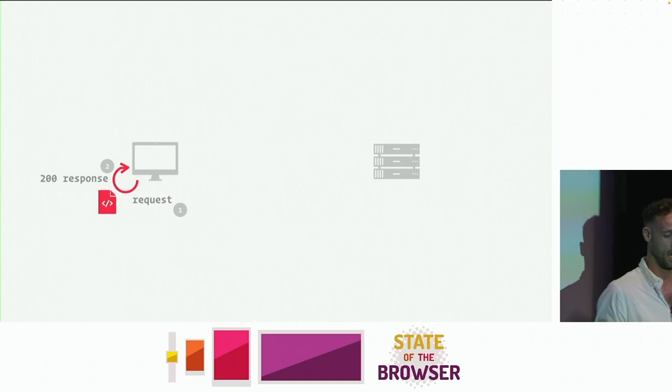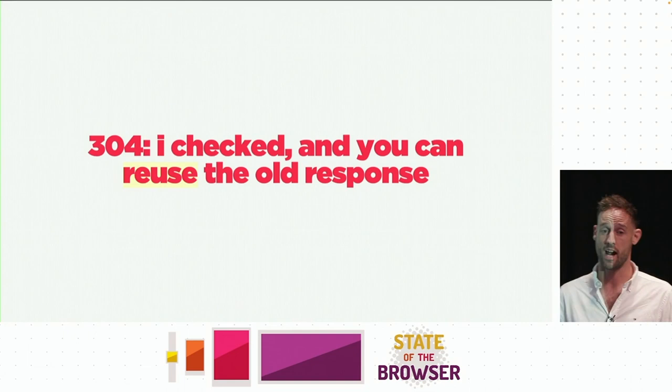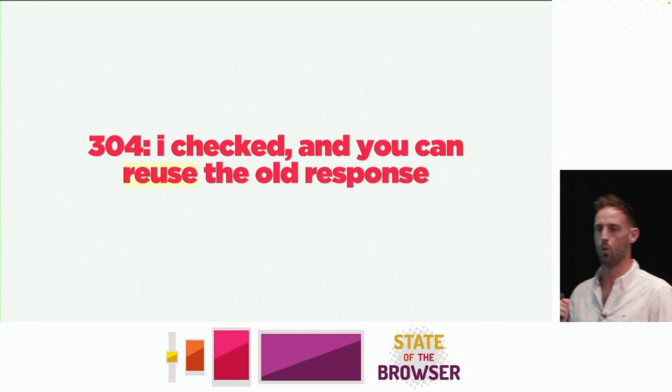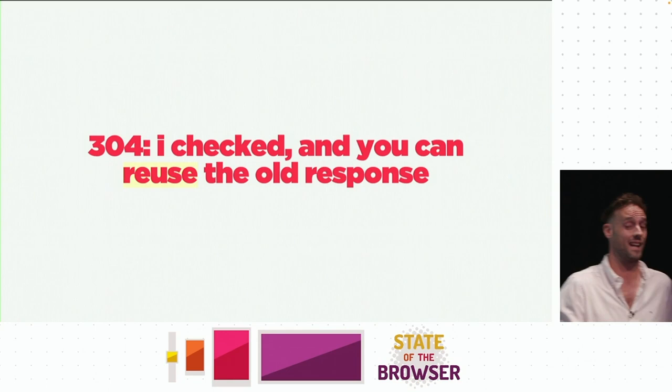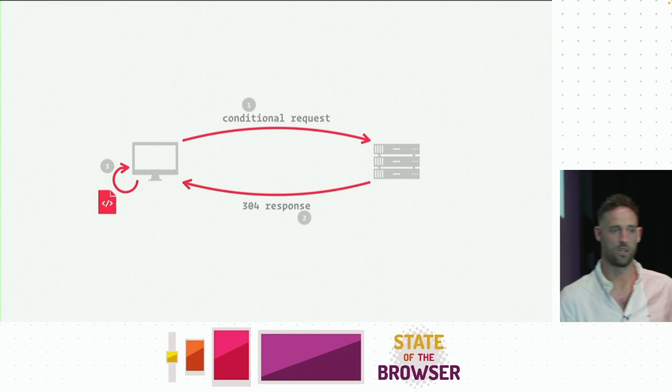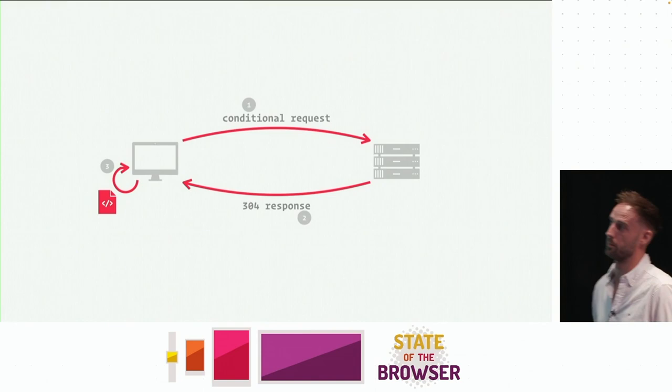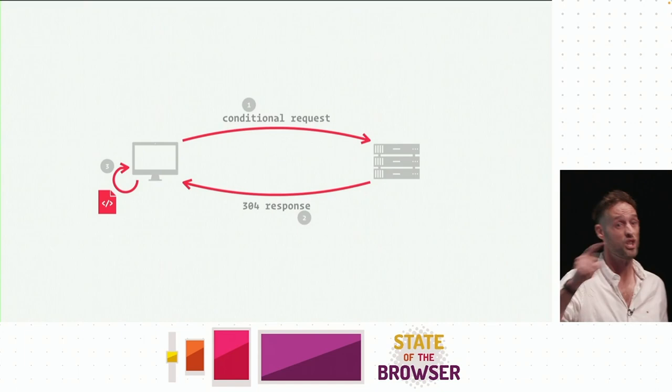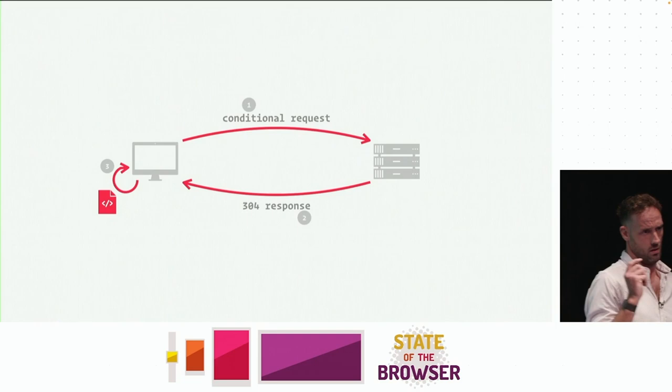A 304 involves a conditional request — a request that goes out with certain extra request headers to verify whether the file has changed. If not, we bring back a 304 response that says 'extend the cache lifetime on that file in cache, renew it.' We don't fetch a full response back. Those are the key concepts. What I want to talk about now is stuff we can just delete — the easiest way to solve problems is to remove most of them.